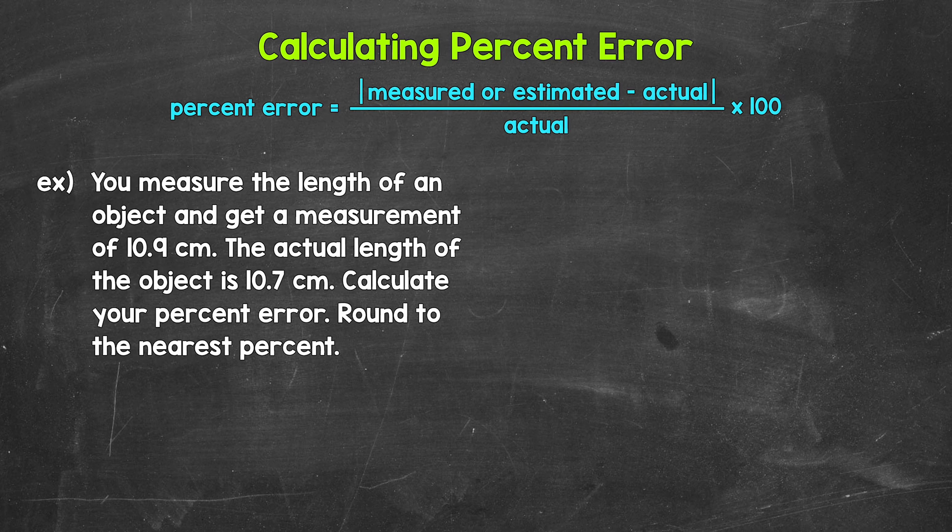Now to calculate percent error, we take the measured value or estimated value and subtract the actual value. Then we take the absolute value of that result. So if it's negative, it will turn positive. Then we divide that by the actual value. This will give us a decimal. We then multiply the decimal by 100 to convert it to a percent.